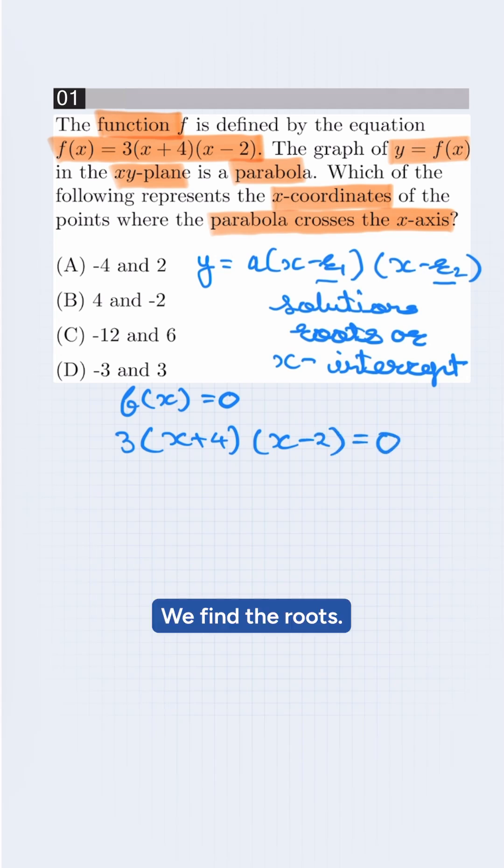We find the roots. This will be x + 4 = 0, which gives x = -4. For x - 2 = 0, x = 2.